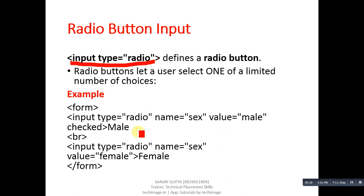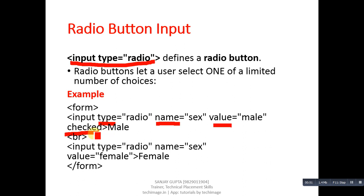The first input type is radio. You can implement this input element including type radio to design radio buttons, and the output will be displayed on the web browser. The input type is radio, its name is sex, value is male, and this radio button will be selected by default because I have written checked here, and it will display male as a caption on the browser.